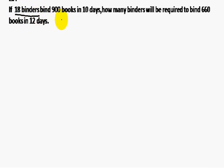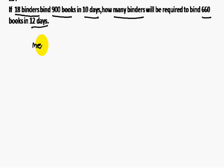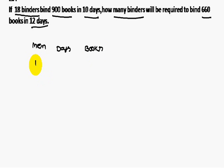Third problem: 18 binders bind 900 books in 10 days. The second statement asks: how many binders are needed to bind 660 books in 12 days? Here you come across three words: men (binders), days, and books. For the first statement: men = 18, days = 10, books = 900.